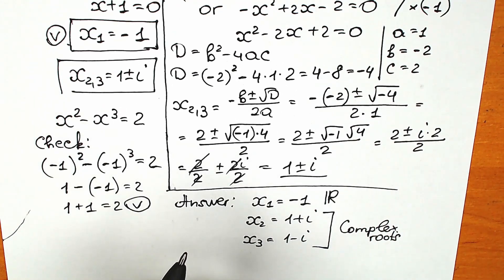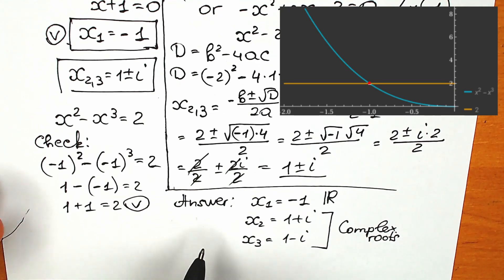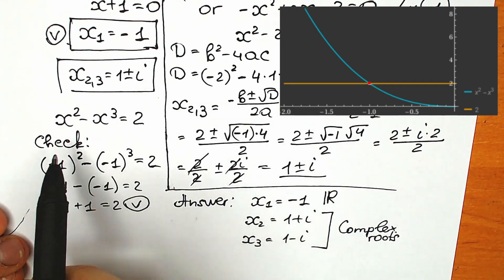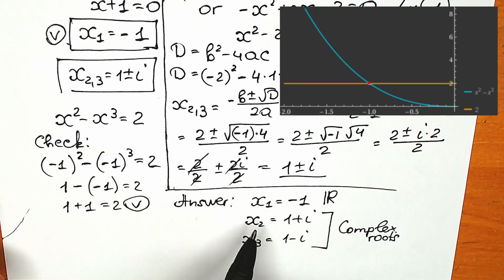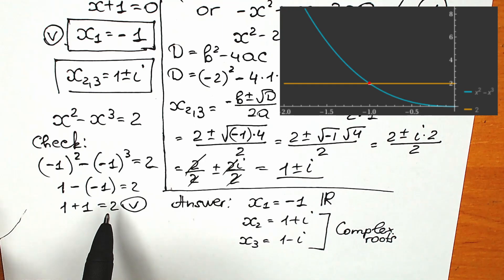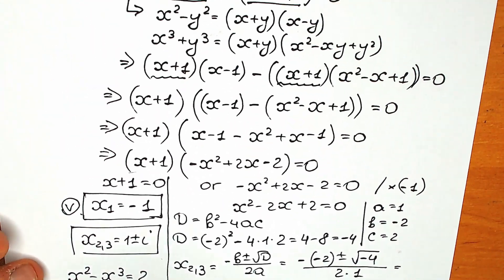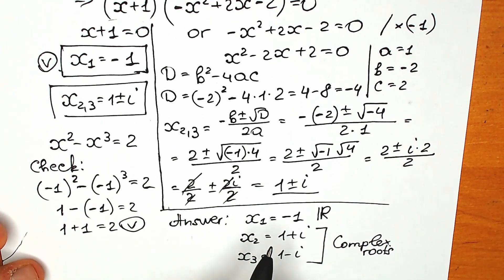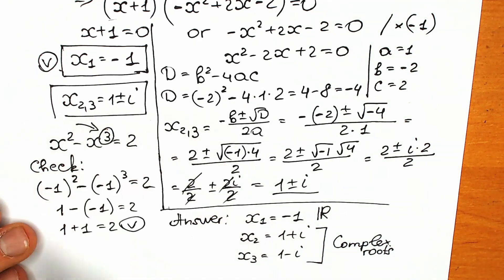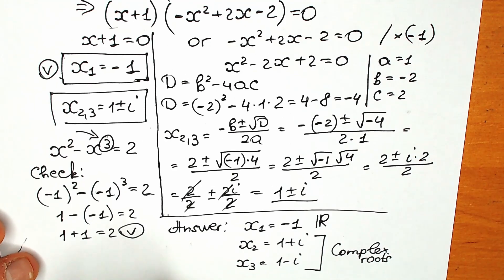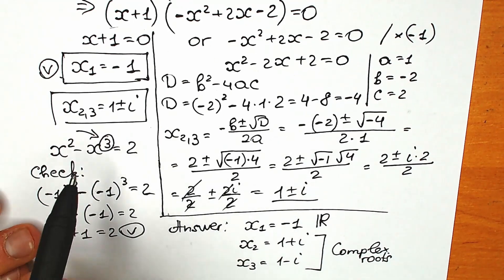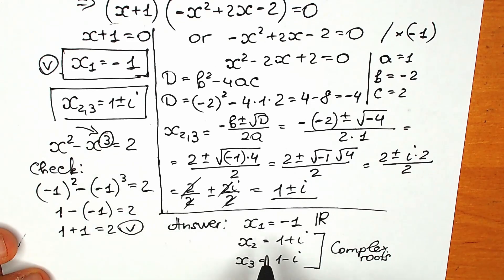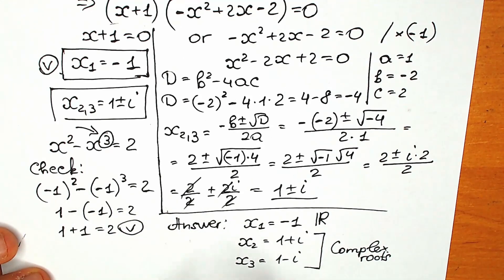You can also see the solution from a geometric perspective — there's a graph showing the points of intersection. A lot of students can solve this quickly by inspection and find x equals minus 1, but don't forget about the complex roots. By the fundamental theorem of algebra, since the highest power is 3, we must have exactly three roots in total — and our method gives all three.